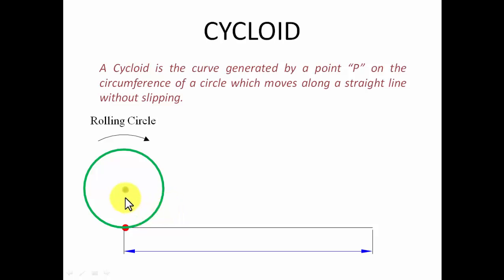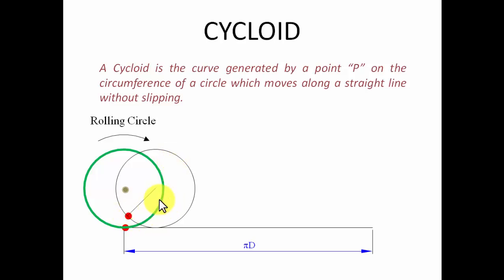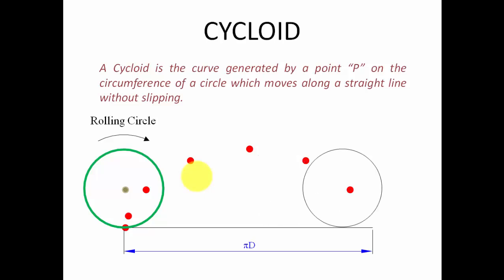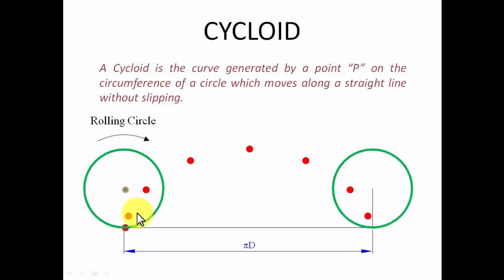Let's move ahead and see where this point goes — we're going to keep track of it. After having tracked this point, we're going to join all those points with a smooth curve. As the circle moves forward, the point arrives at a new position. With each rotation it moves further. For the first half revolution, this point was moving towards the right as well as gaining height. But for the next half revolution, it gained horizontal distance but lost height. These are the tracked points, and when you join them with a smooth curve, you get what is called a cycloid.